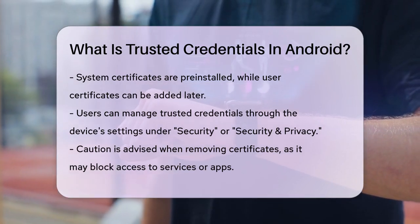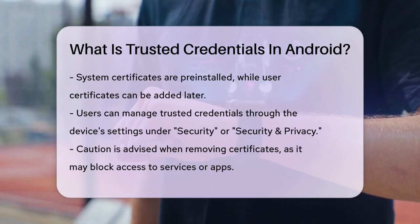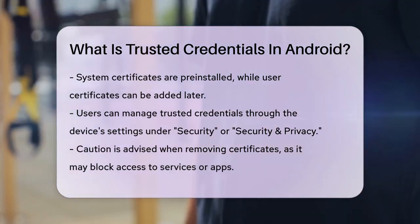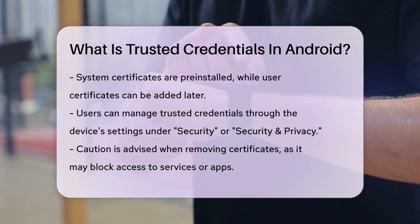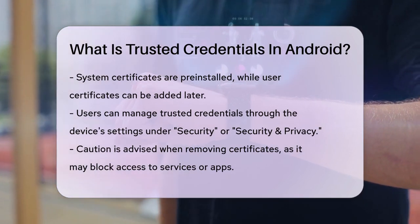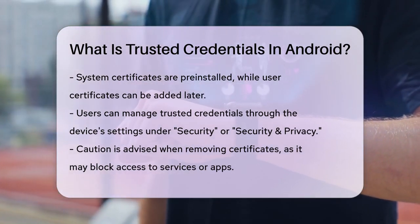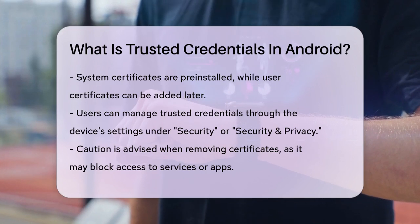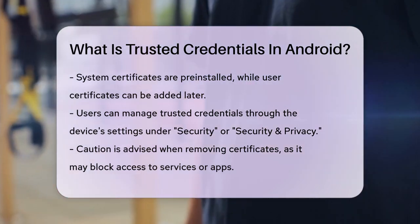You can manage these credentials by going to your device's settings, navigating to the Security or Security and Privacy section, and then selecting Encryption and Credentials. Here, you can add or remove trusted credentials, but it's important to be cautious. Removing the wrong certificates can block access to certain services or apps and expose your device to security risks.